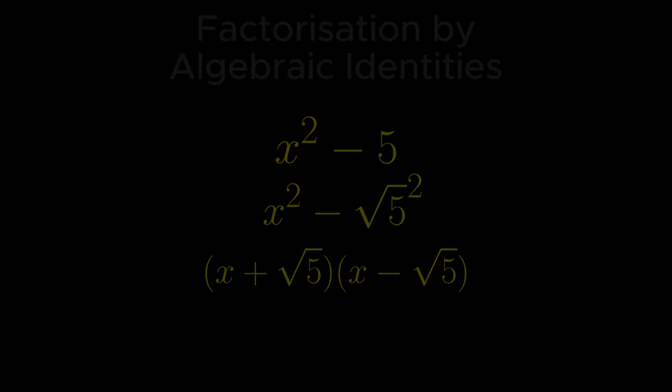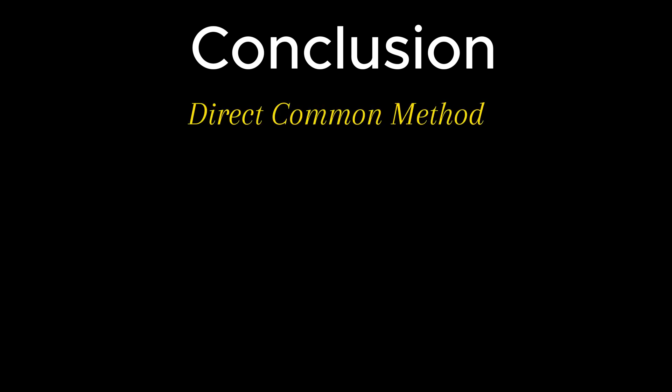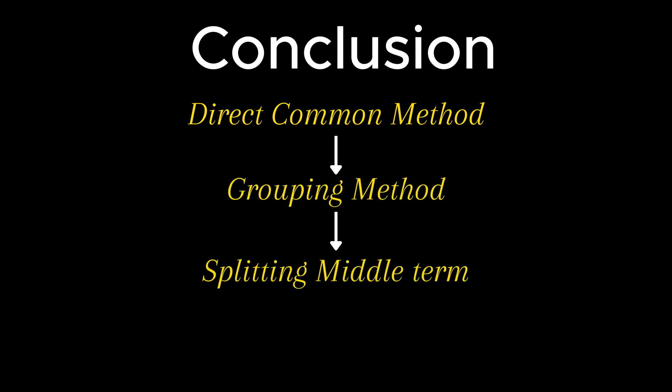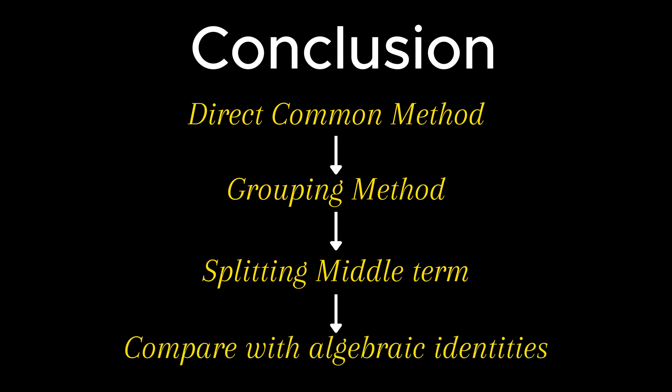In short, to factorize a given expression, one must first try the direct common method. If it fails, then try the grouping method followed by splitting the middle term in case of a quadratic expression. If splitting the middle term also fails, one must try to compare the given expression with the algebraic identities. So this was it for the video. See you in the next one. Thank you for watching.